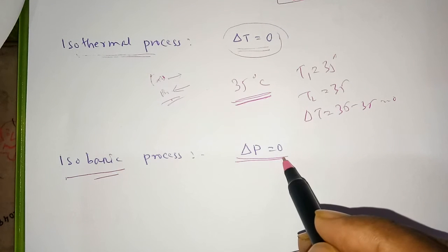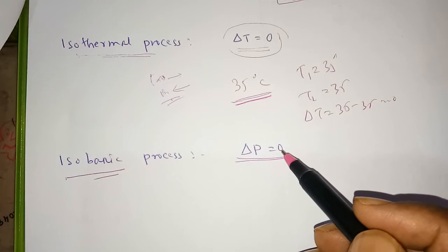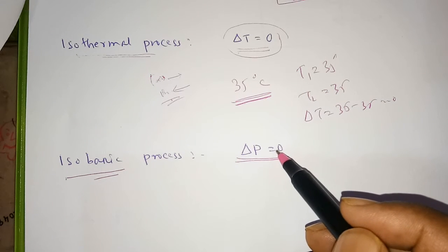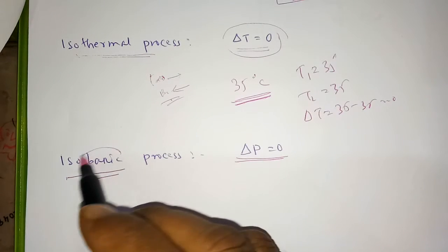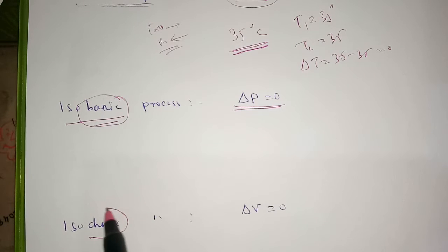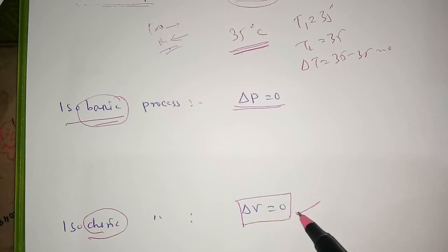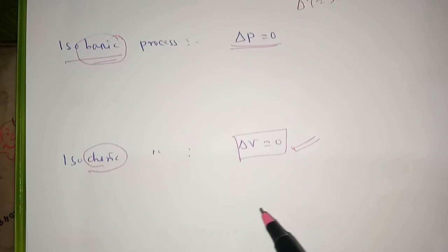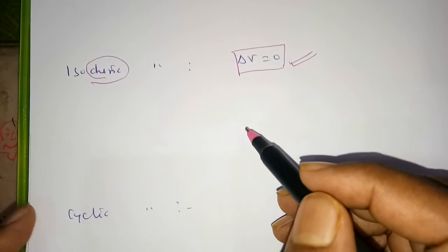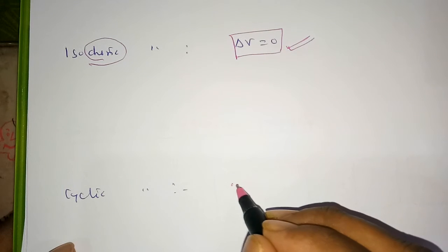Then we have the isobaric process, where the pressure remains constant. For example, when working in the laboratory under one atmospheric pressure, the pressure remains constant — this is called the isobaric process. Another one is the isochoric process: if the volume remains constant in a reaction, then this process is called the isochoric process.